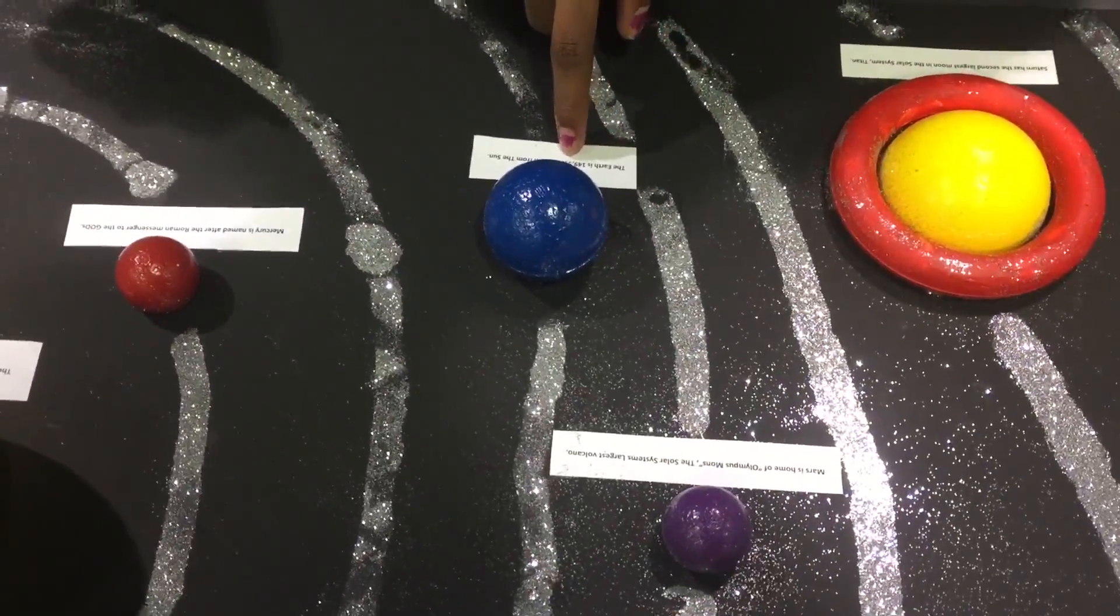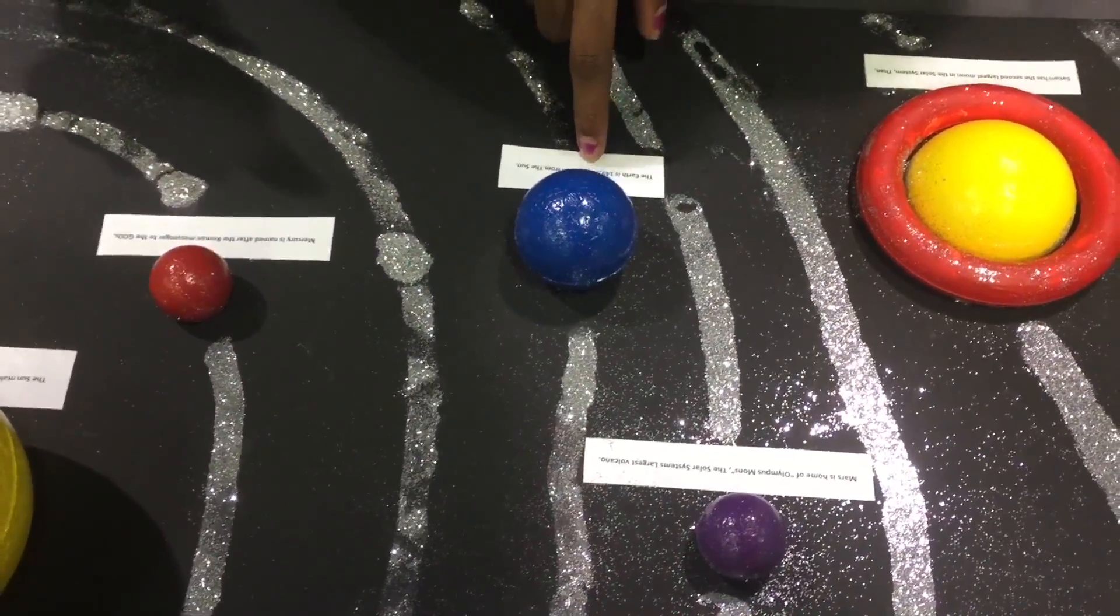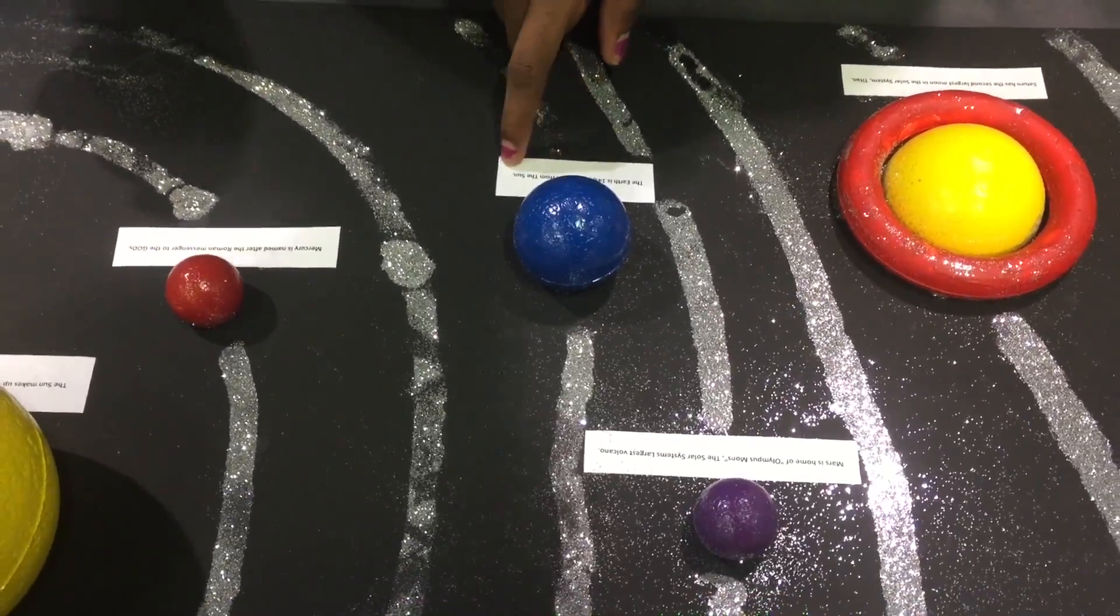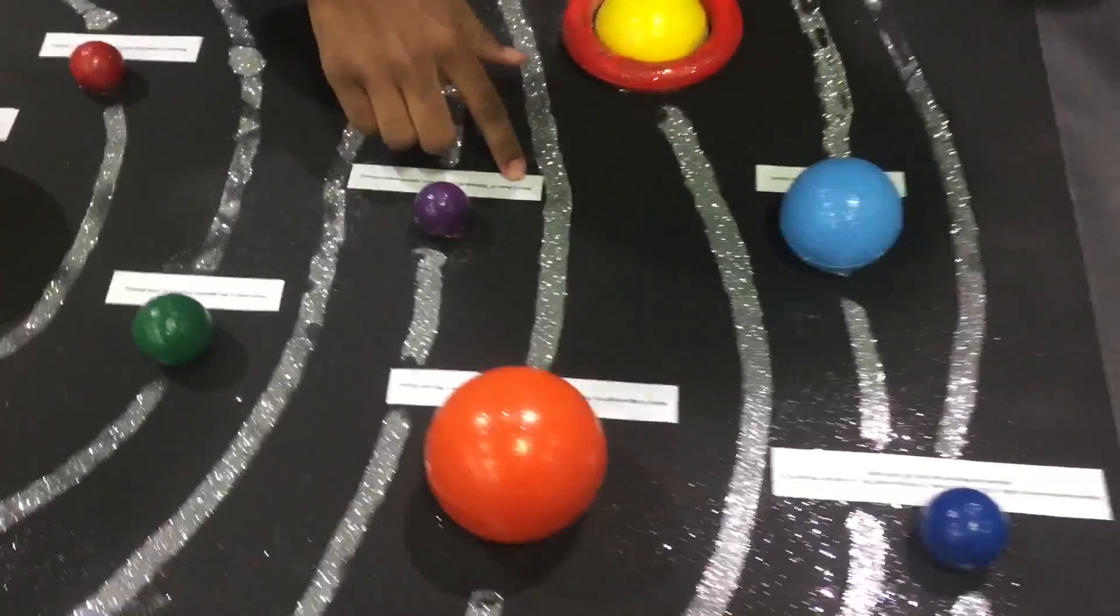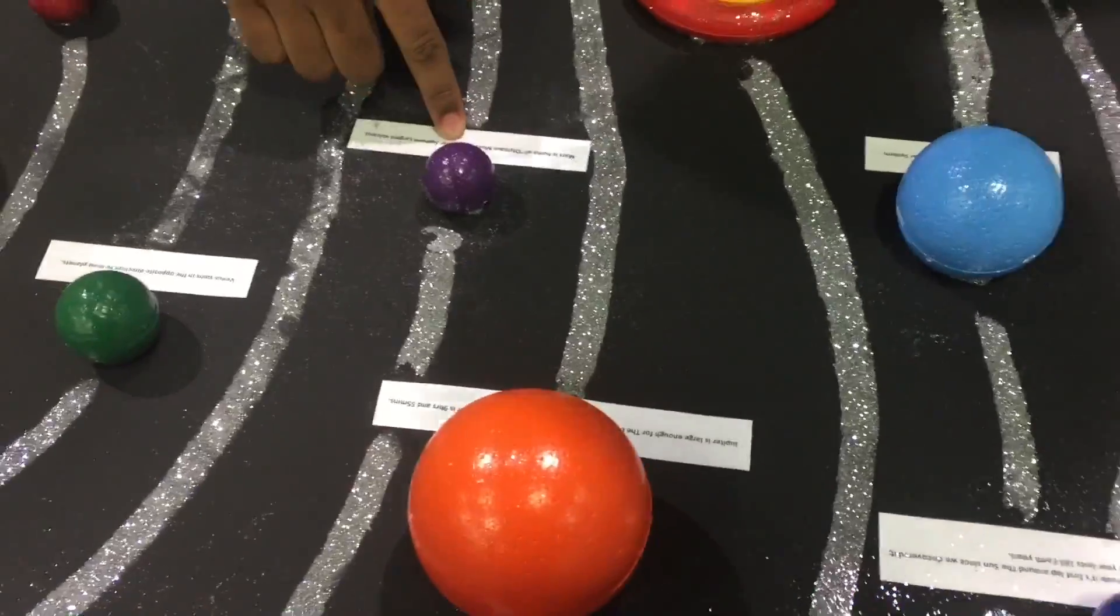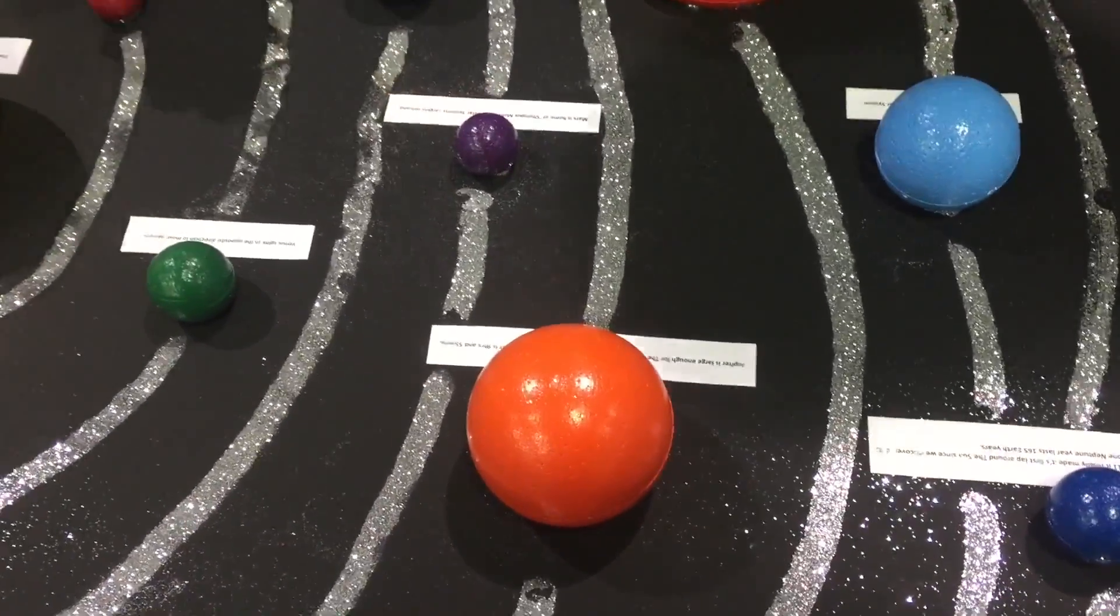The Earth is 149,598,262 kilometers from the Sun. Mars is home of Olympus Mons, the solar system's largest volcano.